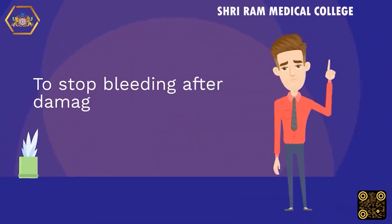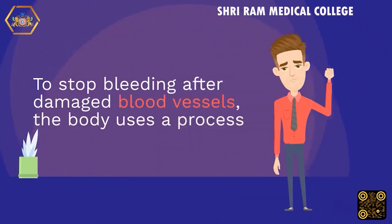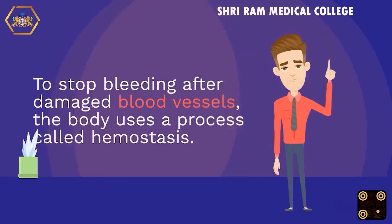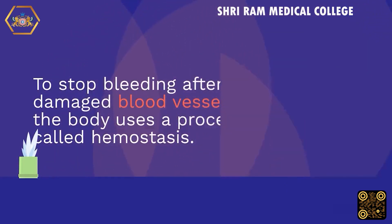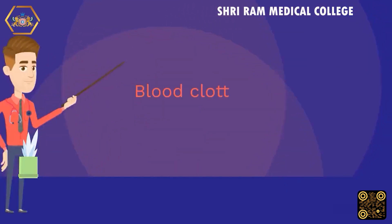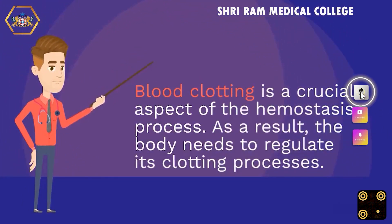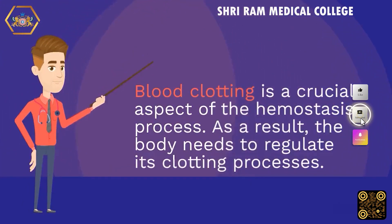To stop bleeding after damaged blood vessels, the body uses a process called hemostasis. Blood clotting is a crucial aspect of the hemostasis process. As a result, the body needs to regulate its clotting processes.